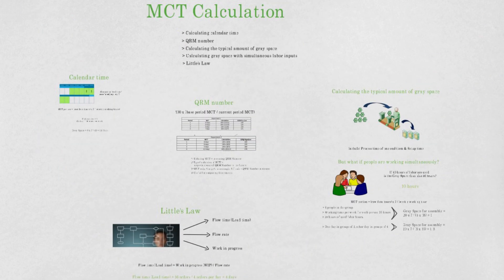This brings us to the end of this video. In this video, you have learned to calculate in calendar dates and to use the QRM number. You also learned how to calculate the gray space and how to do this with simultaneous labor inputs. Finally, you are introduced to Little's Law, which assists your MCT calculation. Thanks for watching.